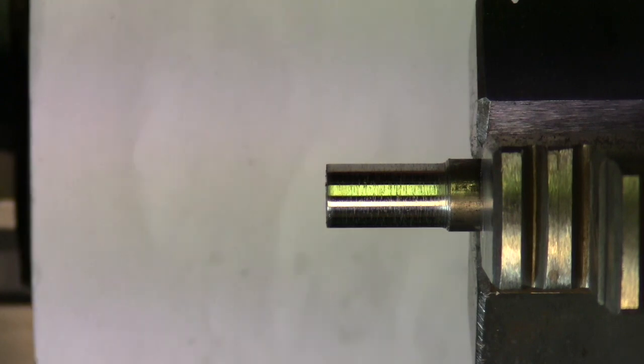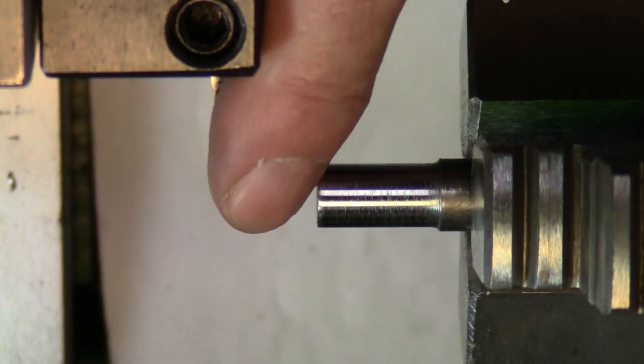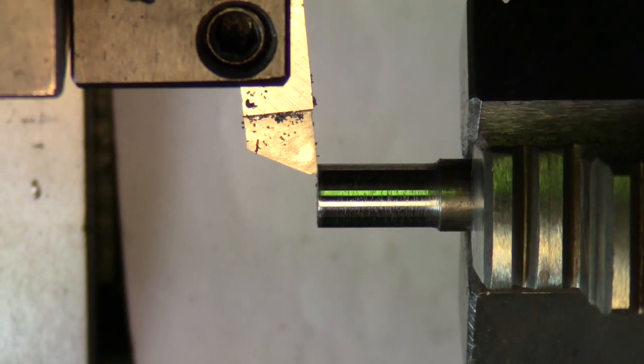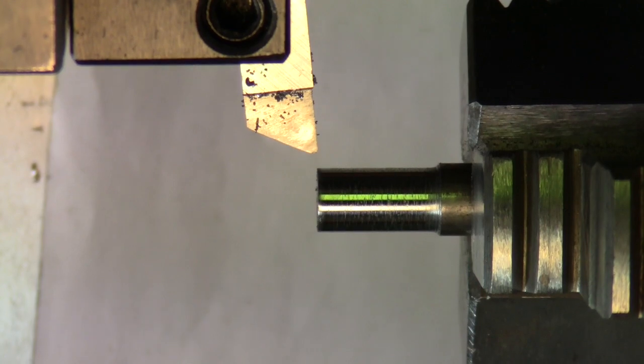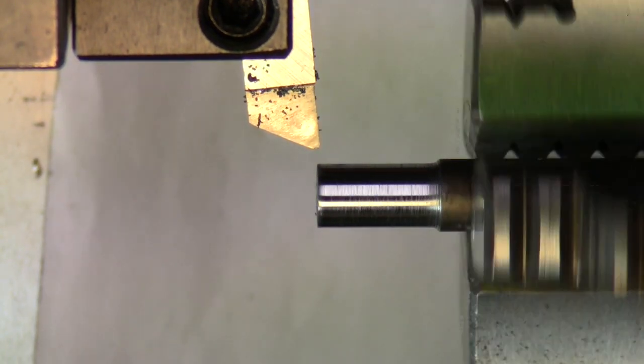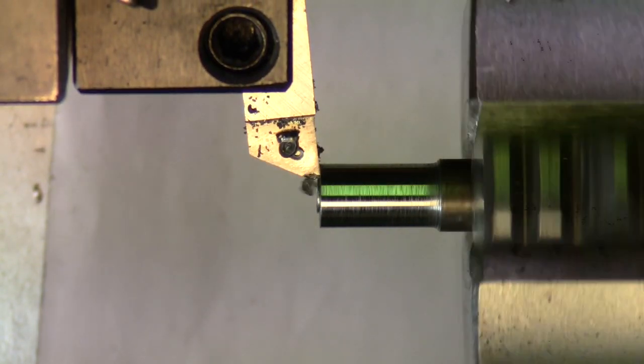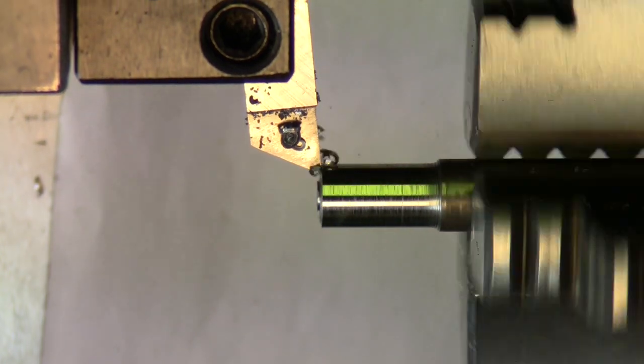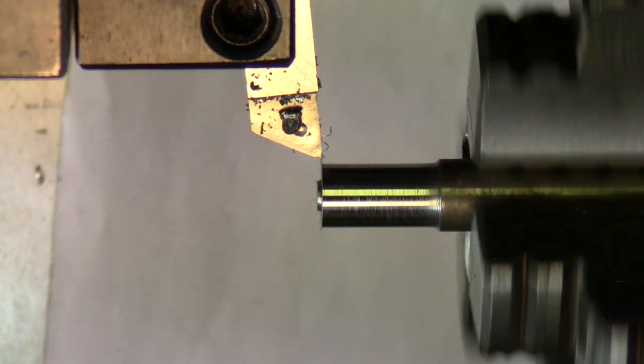All right, I got a nice smooth finish on there. That ought to do fine. Now I want to put a 25 thousandths tip on the end of it. Let me come up, bump my part, set my indicator at zero, and I'm going to dial in ten thousandths, take a cut, just eyeball it, another ten thousandths, and five thousandths.